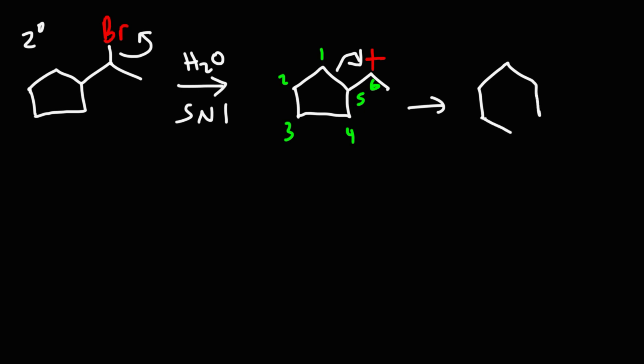What we get is a six-carbon ring — carbon one, two, three, four, five, and six — where carbon six has a methyl group. Now, where should we place the positive charge: on carbon one, six, or five? Carbon one lost the bond but got it back, so it's fine. Carbon six gained the bond, so it loses the positive charge. Carbon five lost the bond but didn't get it back, so carbon five is going to have the positive charge.